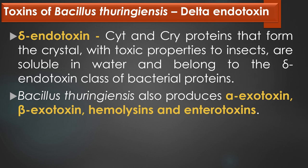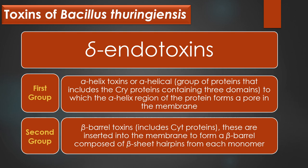The delta toxin forms two classes. The first group of delta toxins has alpha-helical toxins, which includes the CRY protein containing three domains, in which the alpha-helix region of the protein forms a pore in the membrane. The second group of delta toxin contains beta-toxins, which includes CYT proteins, and these are inserted into the membrane to form a beta-barrel composed of beta-sheet hairpins from each monomer.